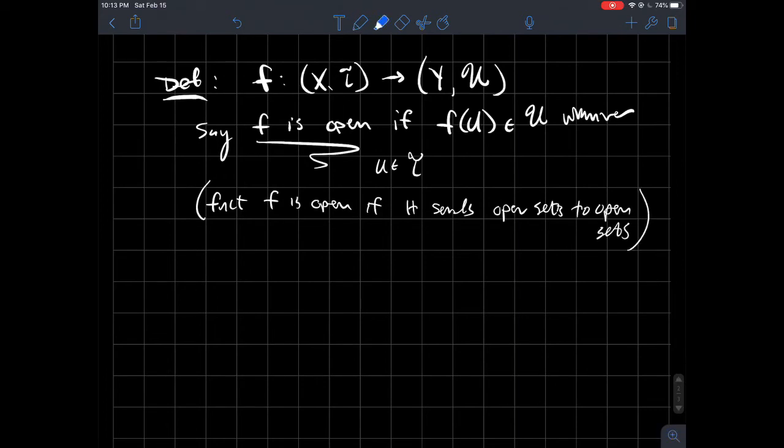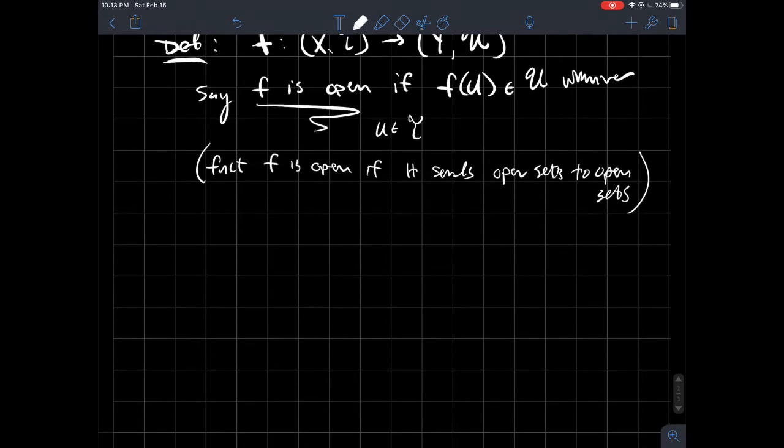Alright, and you're like, that seems similar to continuity. With continuity, remember you're looking backwards. The preimage of an open set is open. So now we're saying that a function is open if it sends an open set to an open set.